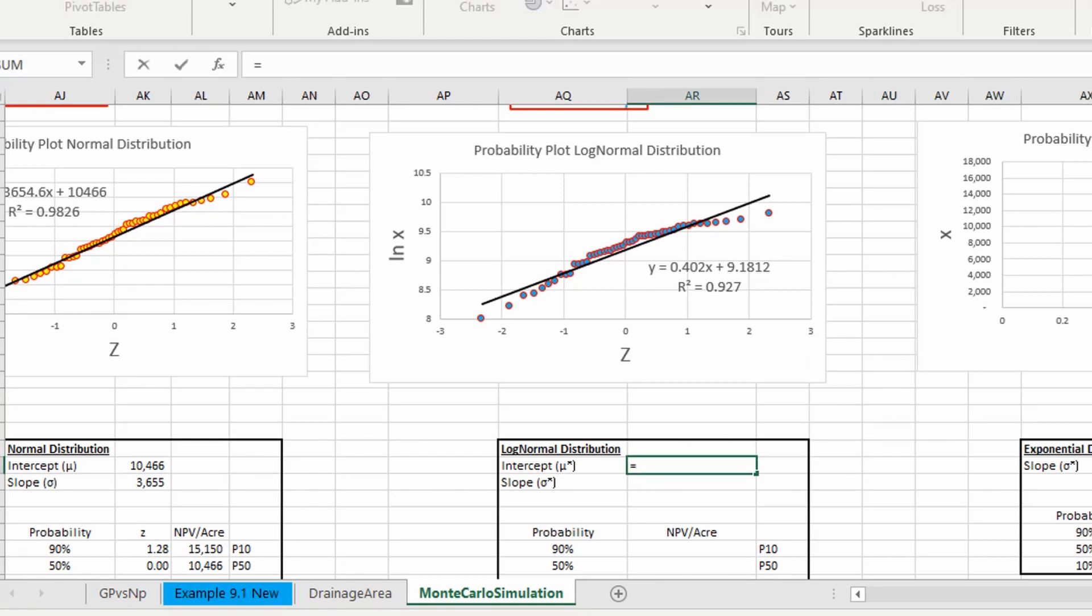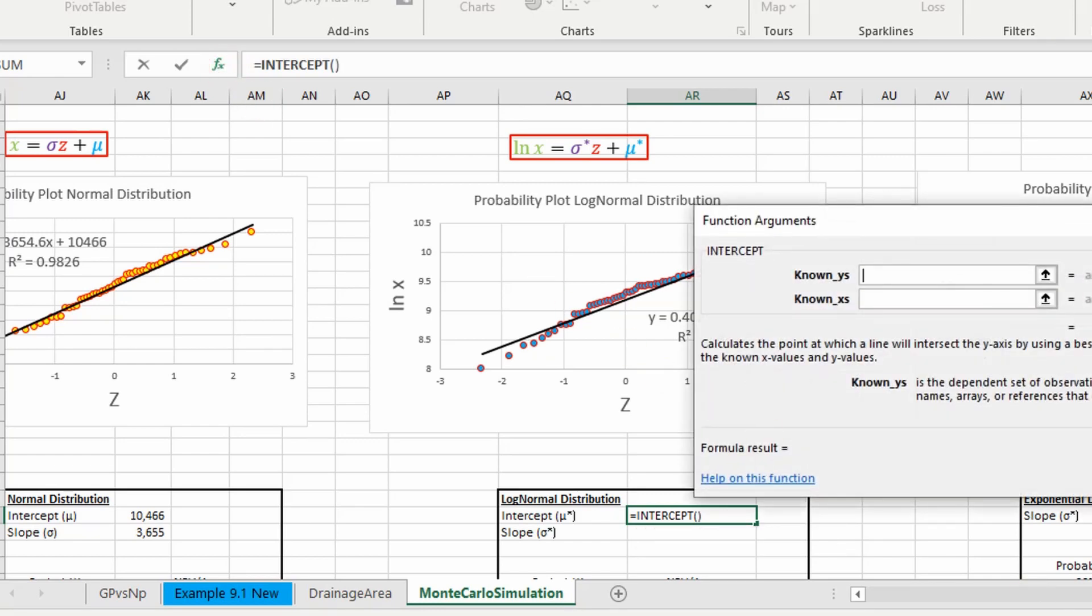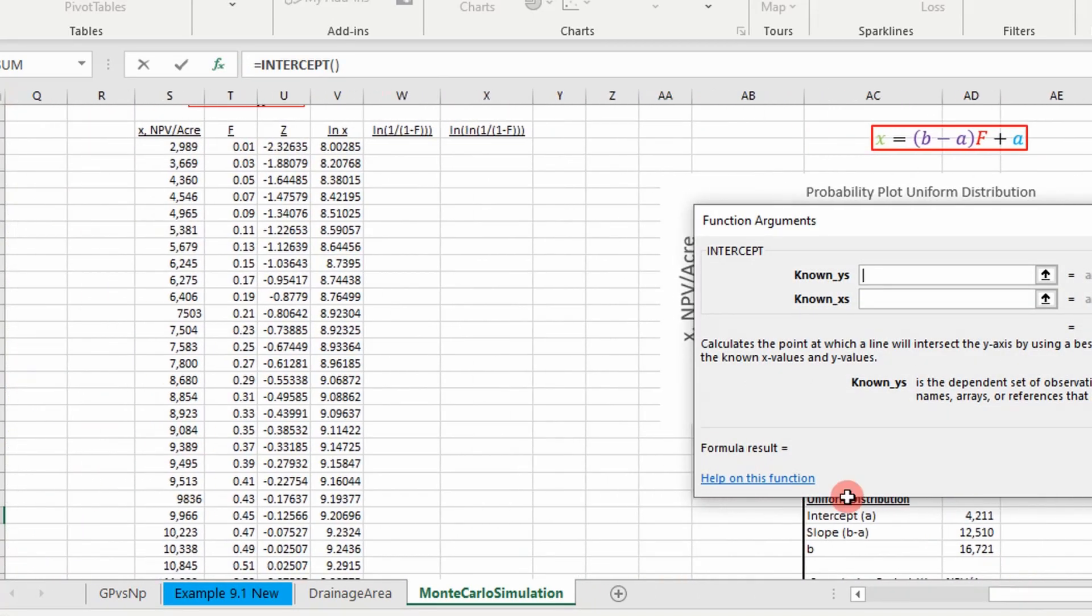So we're going to determine our mean. We want to use the intercept function. And it's going to take our x and y's—in this case, our x's are going to be our z-scores.